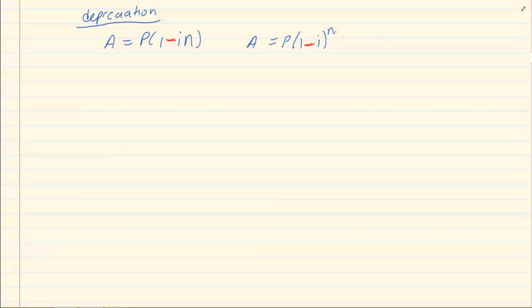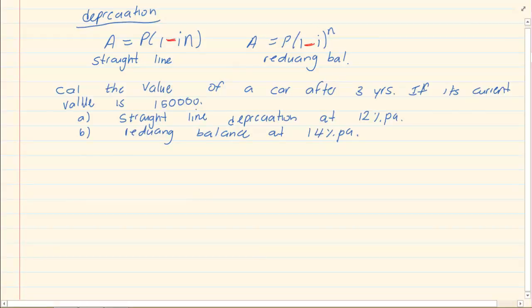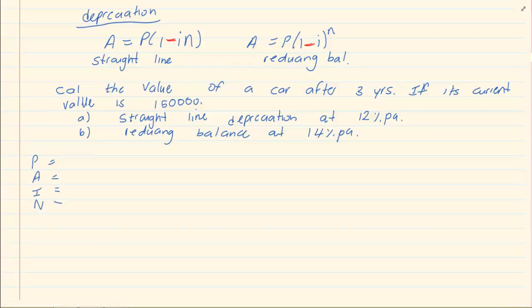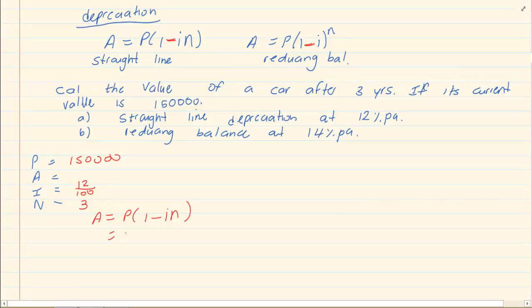Now depreciation there are two types. You get straight line and you get reducing balance. When we are doing straight line it is exactly like simple interest except it is a negative. The method is exactly the same. You write down your payment. You substitute and you get your answer. When we start we are going to write down our payment. We are going to do A first which is straight line. Our P is 150,000. Our interest is 12% which is 12 over 100. And our years is 3 years. We know the formula is A is equal to P(1 minus I times N). Substitute what you have.